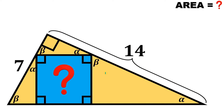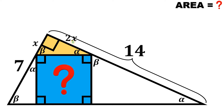So this small right triangle is similar to this right triangle, similar to this right triangle, and similar to the entire big right triangle. Now, take note: this big right triangle's longer leg is twice its shorter leg, because 14 is just 2 times 7. Therefore, in the small right triangle, since they are similar, the ratio of the longer leg to the shorter leg is also 2. So if we let the shorter leg be equal to x, then the longer leg is just 2x.